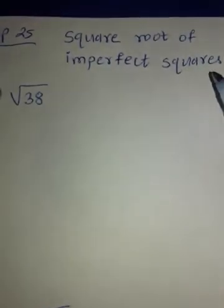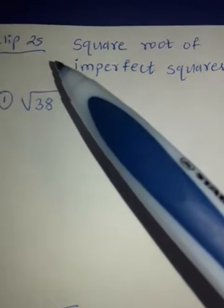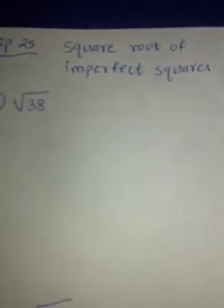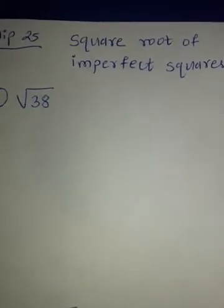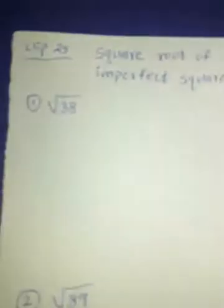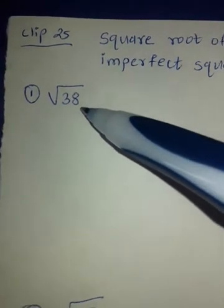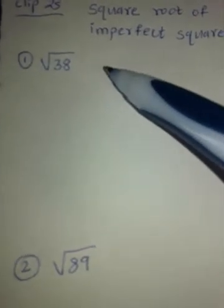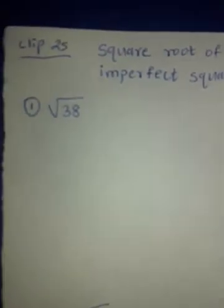Today it's turn of clip 25 and the topic is square root of imperfect squares. If you watched earlier clips 23 and 24, the topics we covered were square roots and cube roots of 5 digit, 6 digit numbers. But today we are going to find square root of such numbers which are not perfect squares. That means their square root is going to be in fraction. So let's see the shortcut way to find this out.